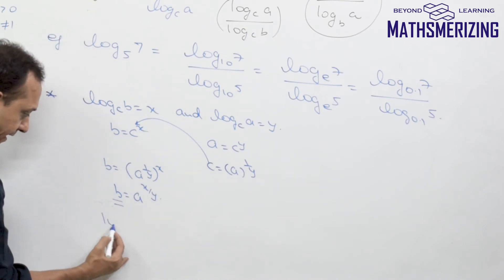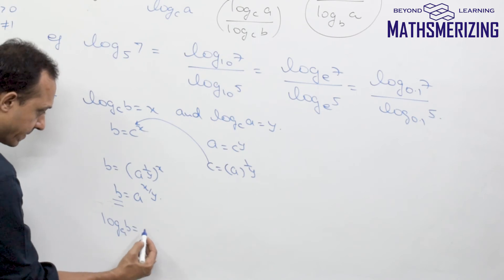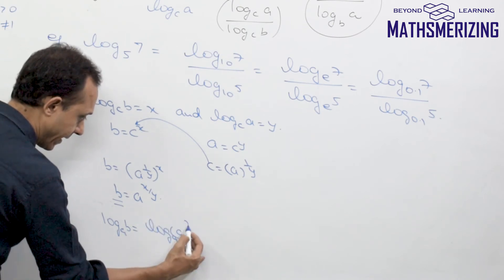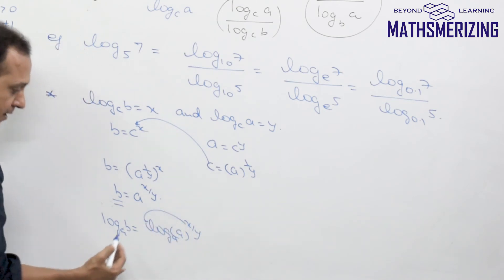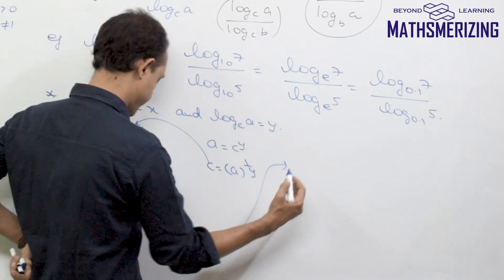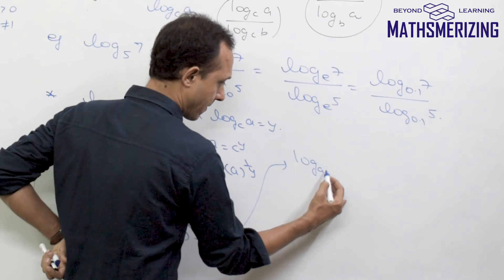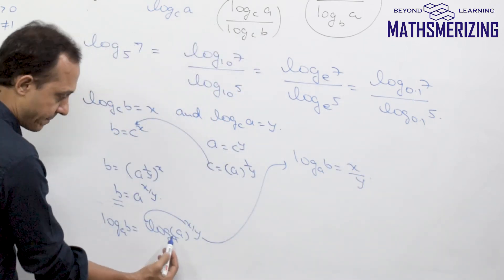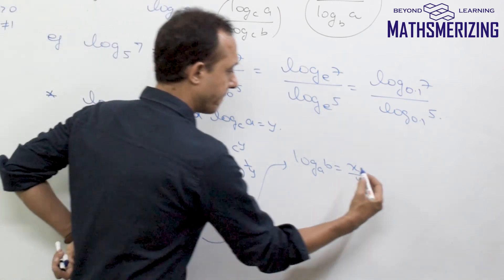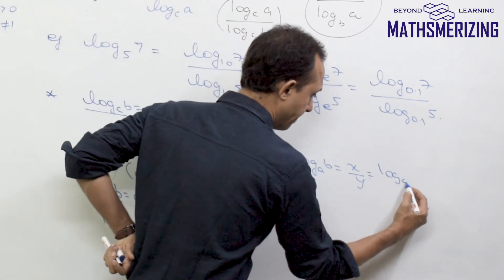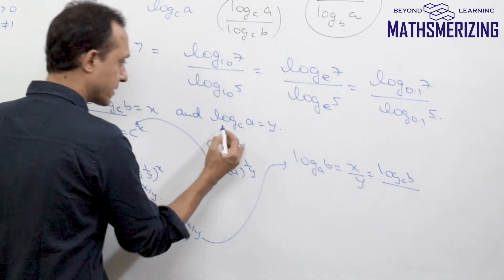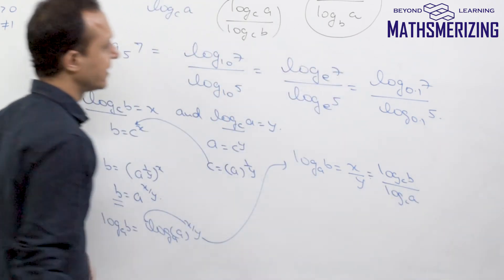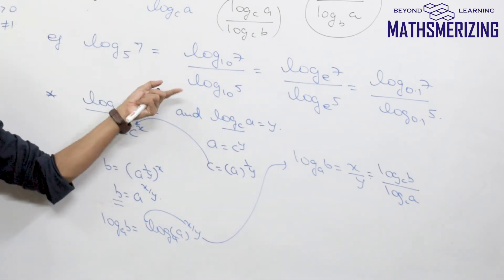Taking log to the base A, we get log B base A equals log of A to the power x upon y. Bringing the power out, log B base A equals x upon y times log A base A, which equals x upon y. Since x equals log B base C and y equals log A base C, this gives log B base A equals log B base C upon log A base C, which is how we prove this property.